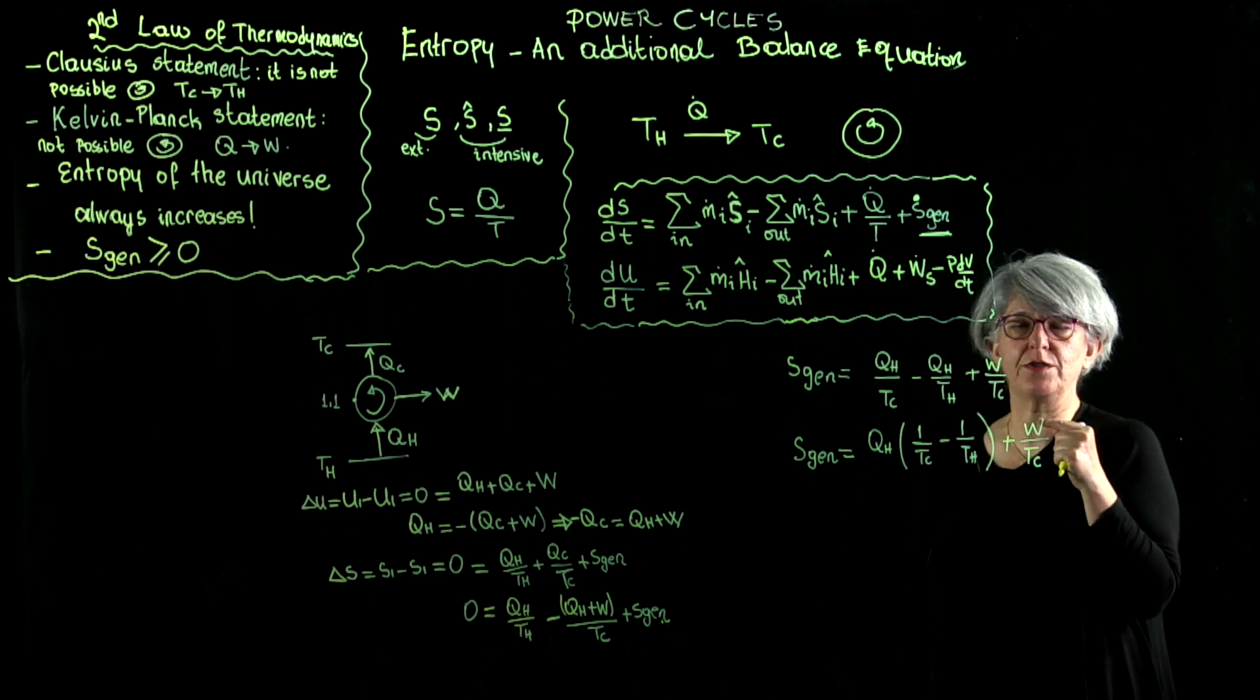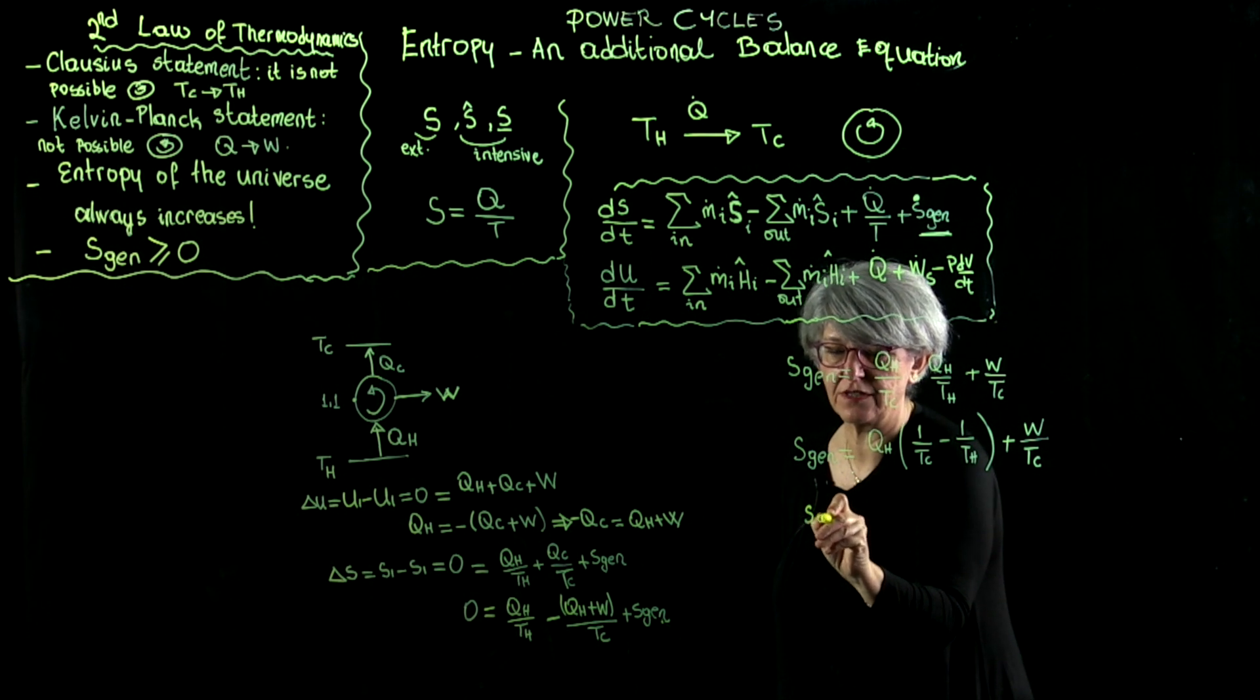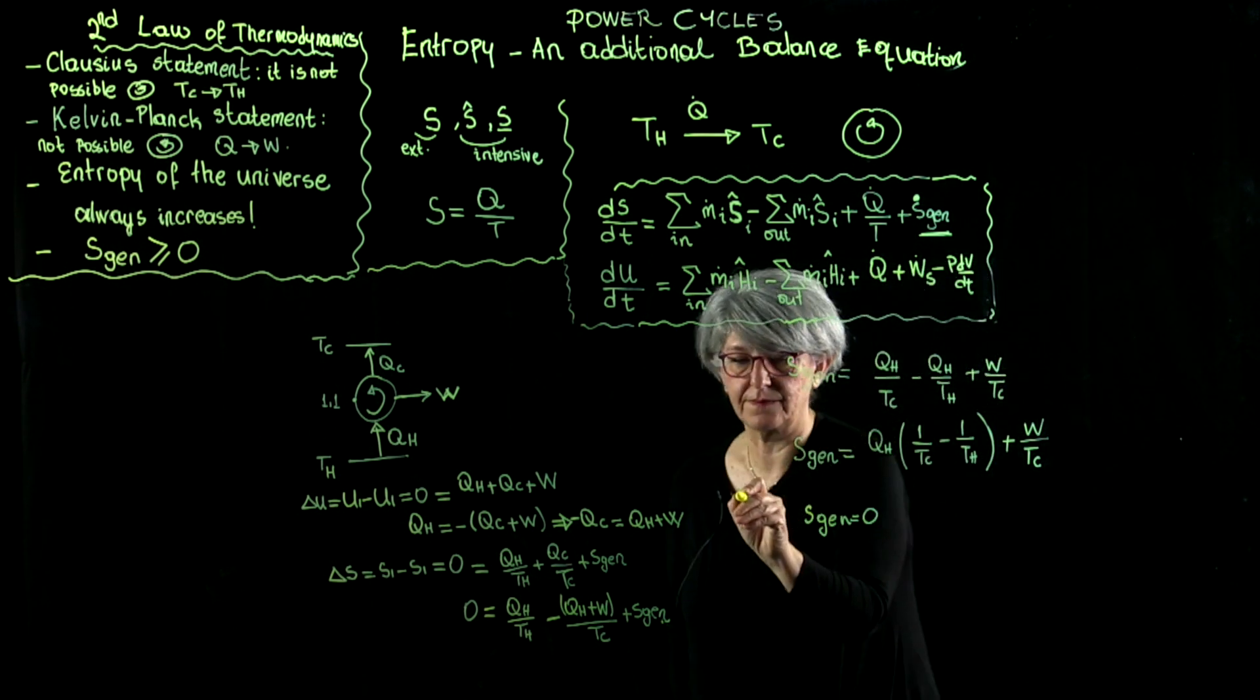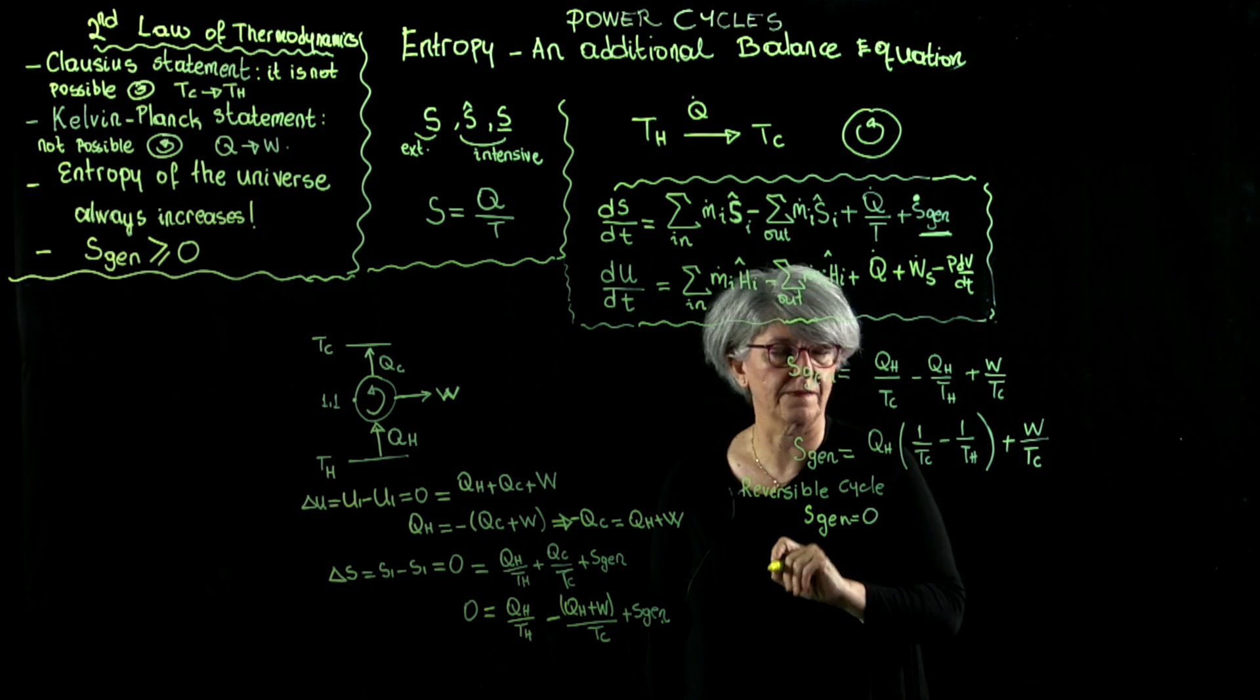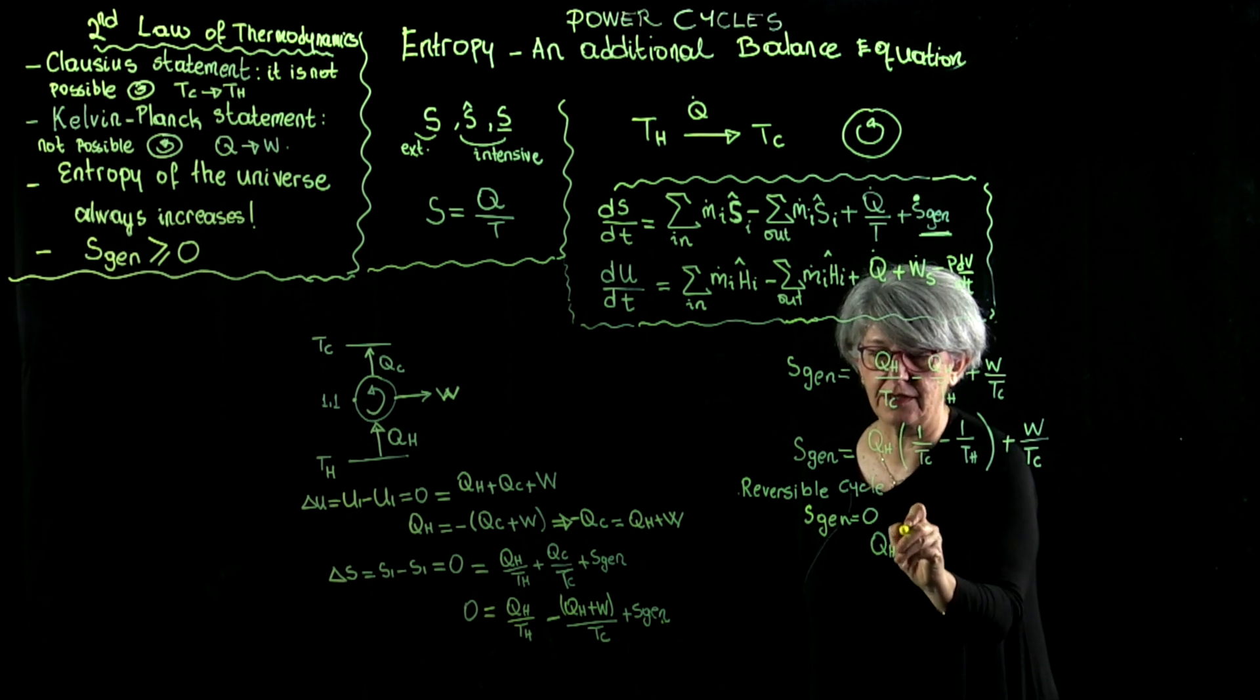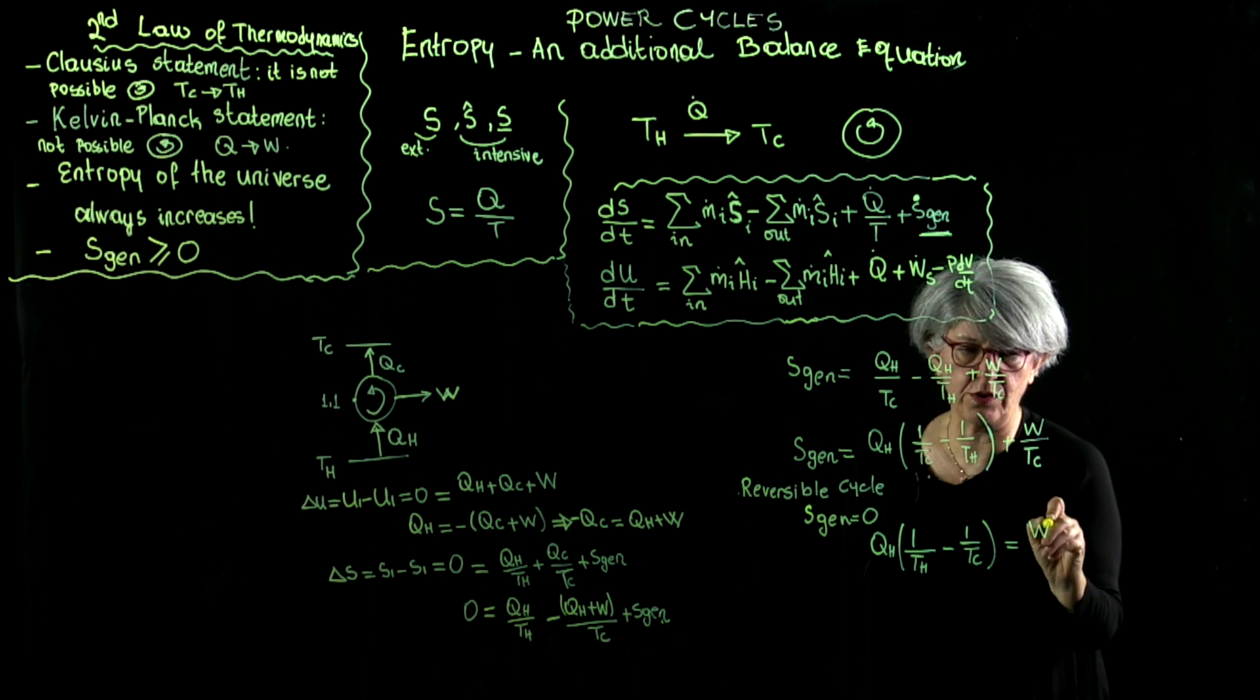Now, let's invoke the reversibility condition. When entropy generation equals zero, the process is reversible. So let's look for the situation where s generation equals zero. For the reversible cycle, entropy generation should be equal to zero. We're going to have q sub h multiplied by 1 over t sub h minus 1 over t sub c equal to work over t sub c.